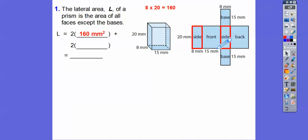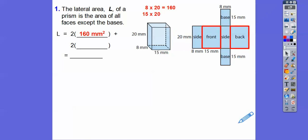The front faces are 15 by 20 — there's the front piece and the back piece. So 15 times 20 is 300, and since there are two of them we add those together. The total lateral area is the sum of those values.